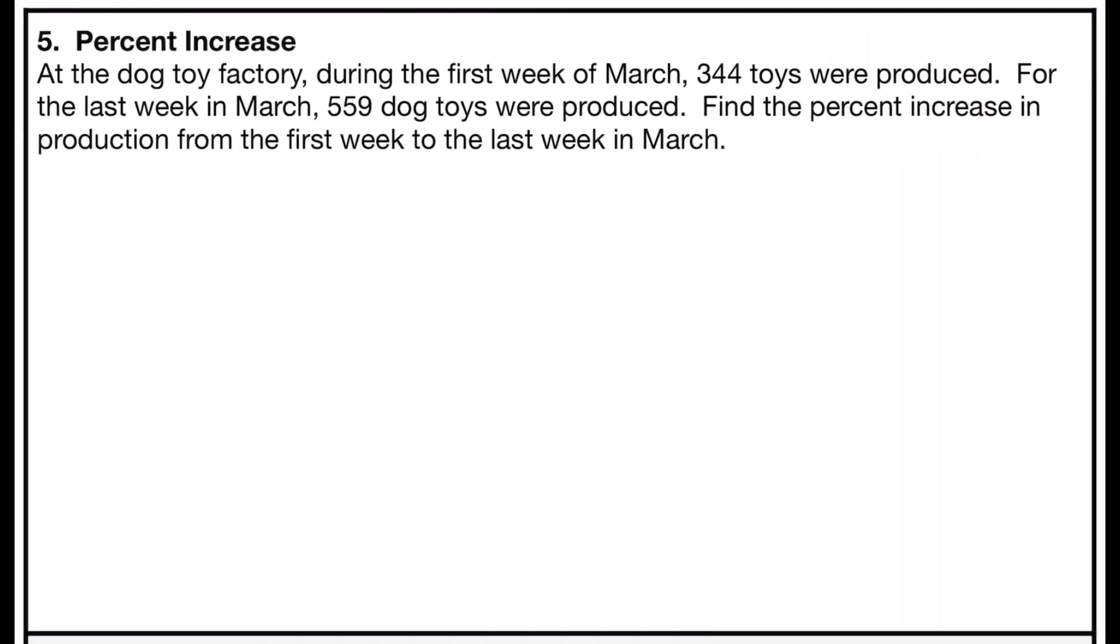Problem number five deals with percent increase. It says at the dog toy factory, during the first week of March, 344 toys were produced. For the last week in March, 559 dog toys were produced. Find the percent increase in production from the first week to the last week in March. So percent increase has a formula. You take the new amount, and you subtract out the old amount, then you divide that by the old amount, that will give you a decimal, and then you multiply that by 100 to give you the percent increase.